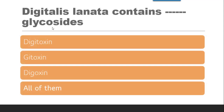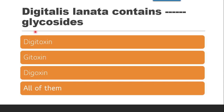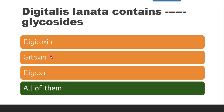These two species of digitalis contain different glycosides. Digitalis purpurea contains two glycosides: digitoxin and gitoxin. Digitalis lanata contains three glycosides: digitoxin, gitoxin, and digoxin. So Digitalis lanata contains all three glycosides. The question asks which glycosides Digitalis lanata contains — digitoxin, gitoxin, and digoxin — and the correct answer is all of them.